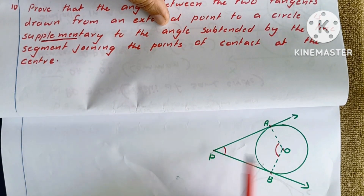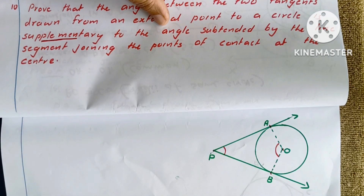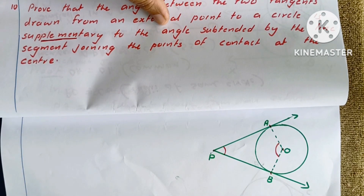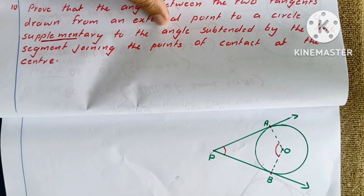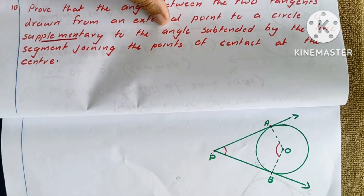We need to prove that angle P plus angle O equals 180 degrees. The sum is 180, and we prove it.